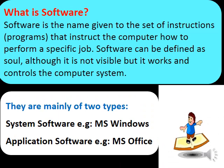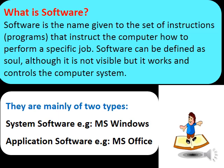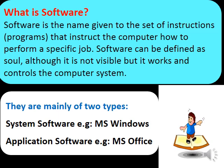What is software? Software is the name given to the set of instructions or programs that instruct the computer how to perform a specific job. Software can be defined as something that is not visible but it works and controls the computer system. It is mainly of two types: first, system software, for example MS Windows; second, application software, for example MS Office.